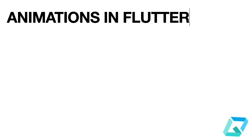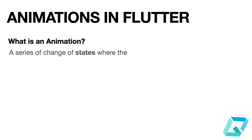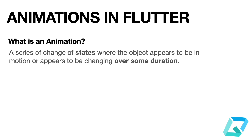Let's start with the basic definition of animations in Flutter. An animation is a series of changes of states where an object appears to be in motion or appears to be changing over some duration. The key bolded terms are 'states' and 'over some duration.' State can be color, size, height, width, or position. And of course, for an animation, there has to be some duration.